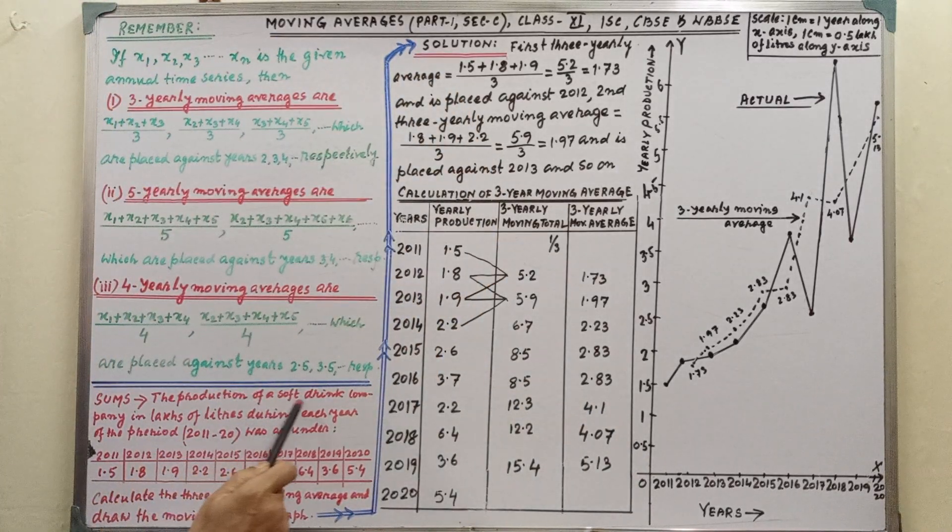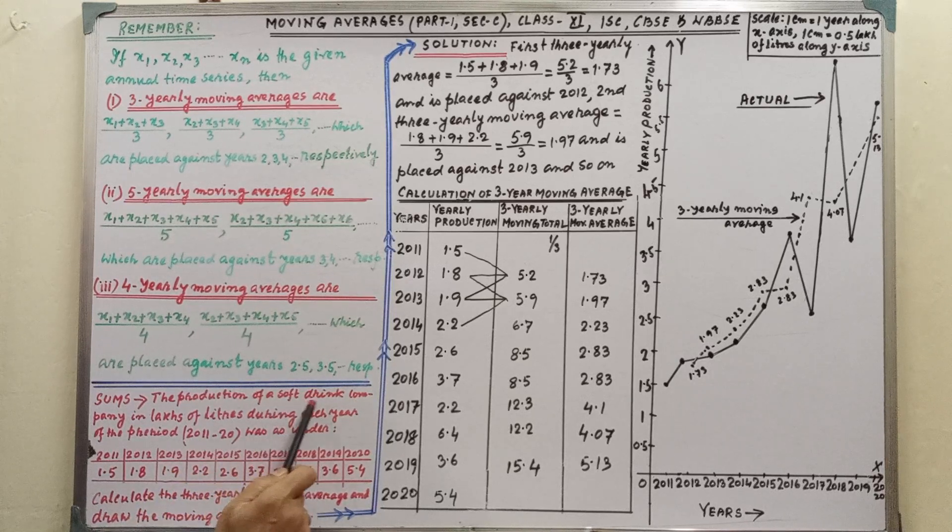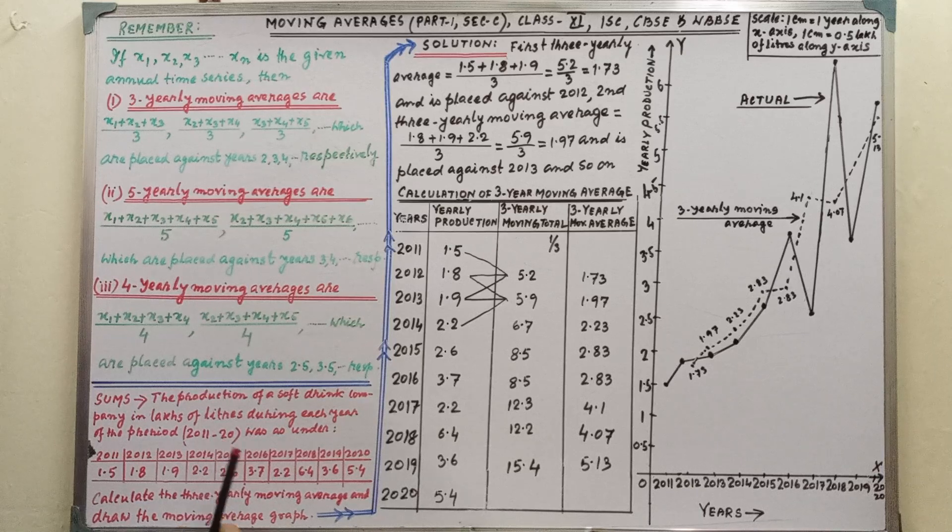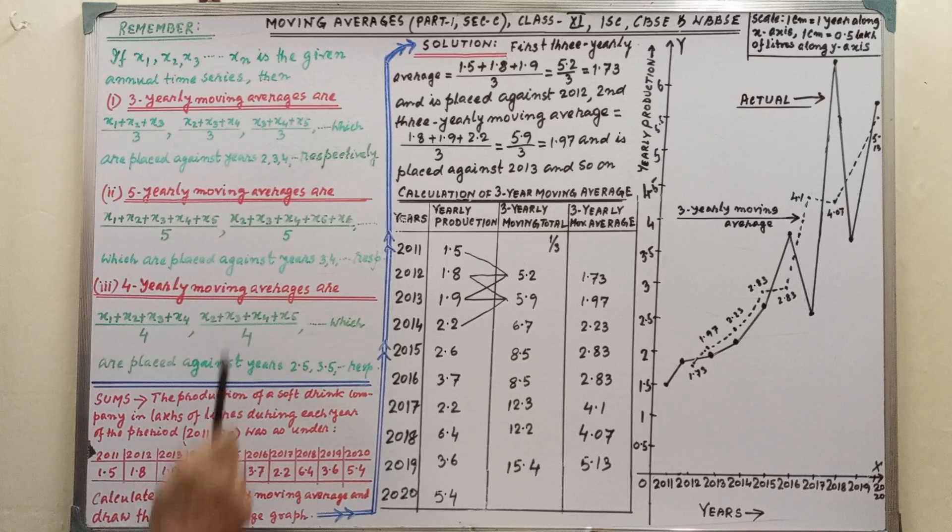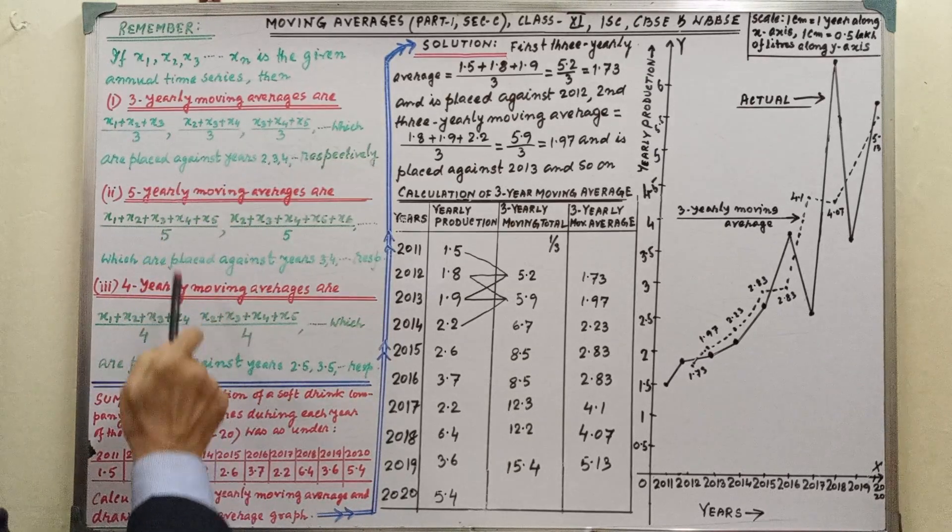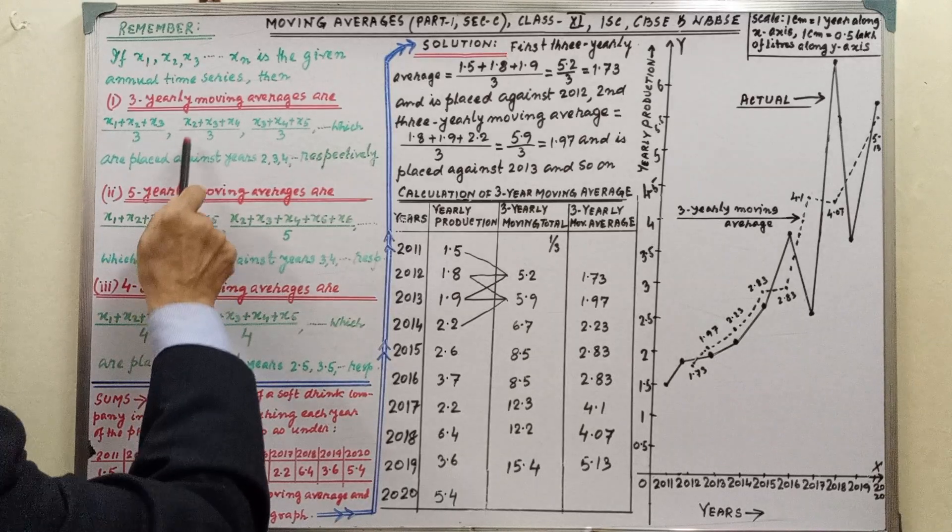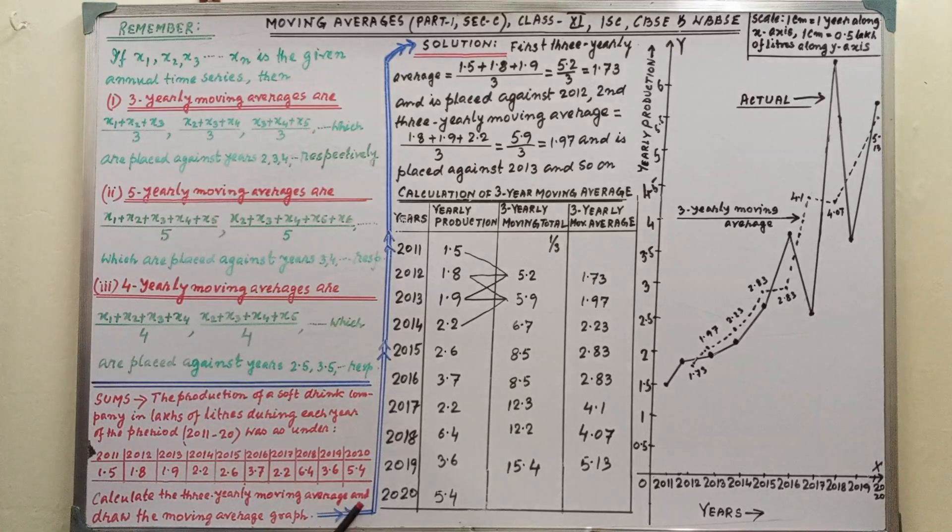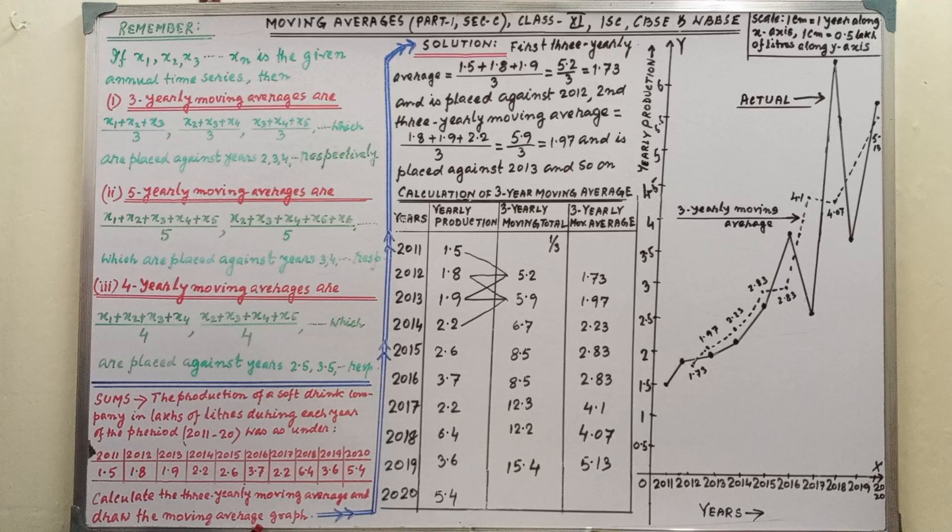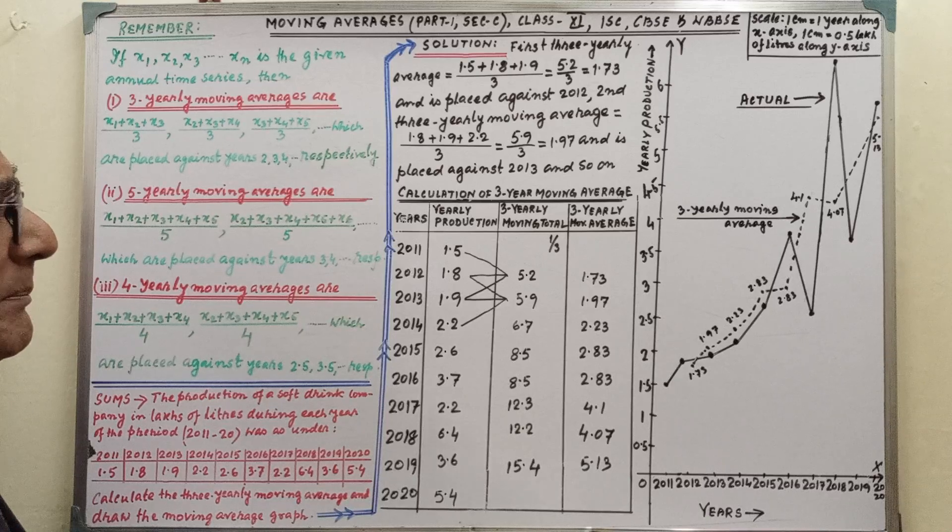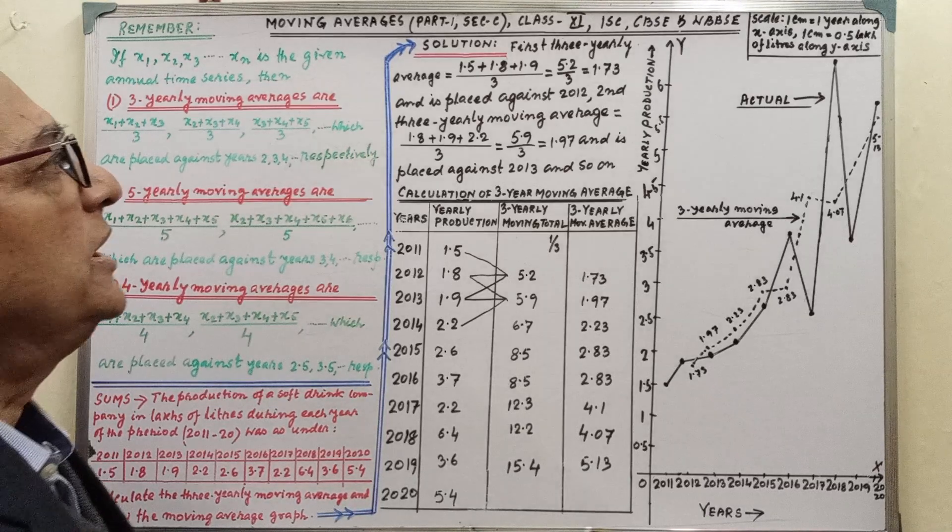The problem is written here clearly. The production of a soft drink company in lakhs of liters during each year of the period 2011 to 2020 was as shown. Calculate the 3 yearly average and draw the moving average graph. First, we have to make the table, then we have to draw the graph. Now, pay your attention on the solution.